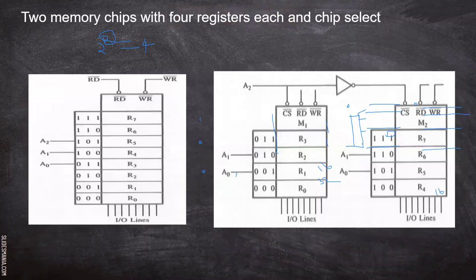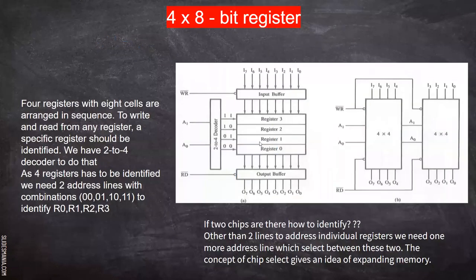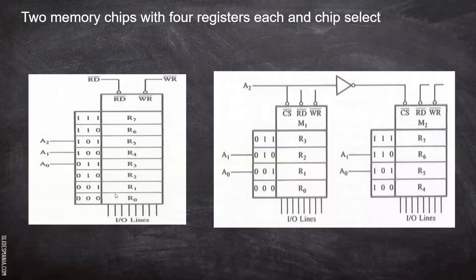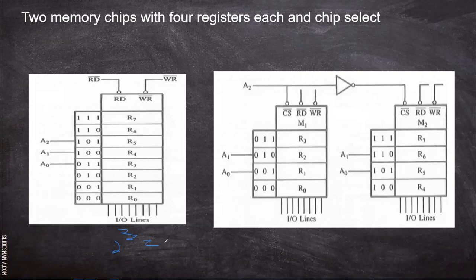You can keep on expanding the memory when you are able to address each individual chip. Now, two memory chips with four registers each. What we have seen previously is four registers with eight-bit lines. Here we have eight registers. Eight registers can be accessed with two to the power three — that is three address variables. So we have three lines, then read and write. This is a memory chip with read lines. The same lines can act as input or output lines depending upon read and write.